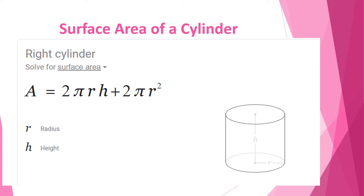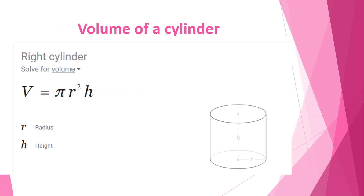To find the surface area of a cylinder we have the following formula: A equals 2 pi r h plus 2 pi r squared. This is a little bit complicated and may not come out on the exam, but it's good to know. R is the radius and H is the height; pi is 3.1416 and the 2 is constant.